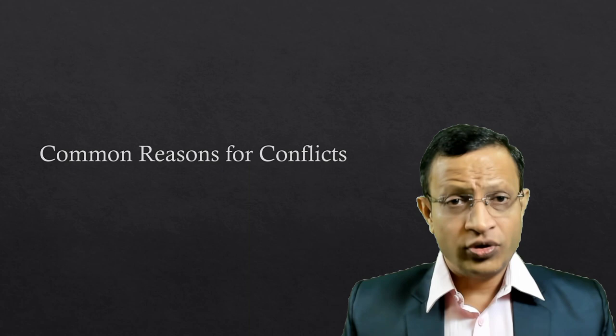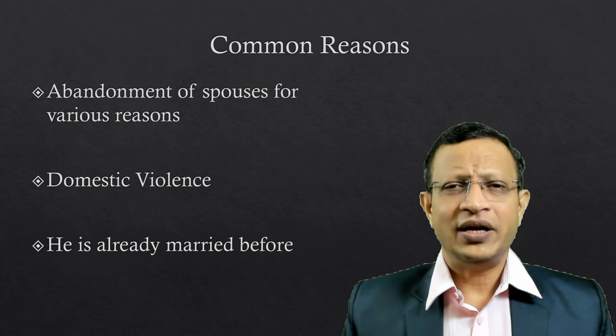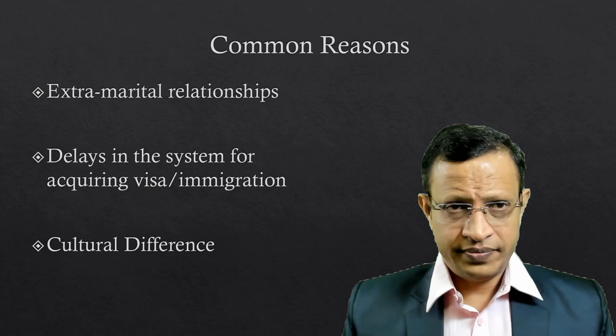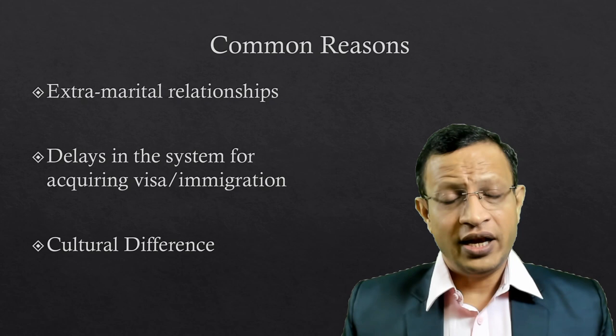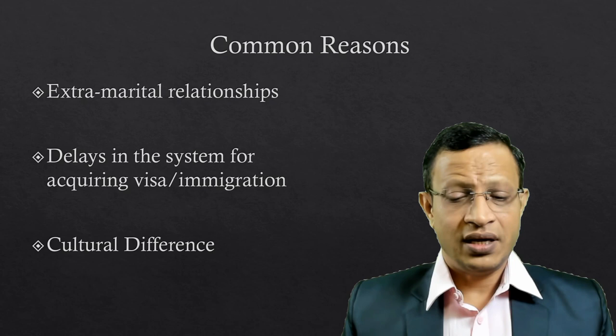Let's discuss common reasons for conflicts. Invariably, one spouse will abandon the partner — usually the husband throws the woman out of the house. There may be domestic violence, or one partner was already married earlier without disclosing it. There may be an extramarital relationship — a girl married to a foreigner or NRI may later discover he was already married or is having an extramarital relationship. There may also be delays or rejection in getting a visa or processing immigration.